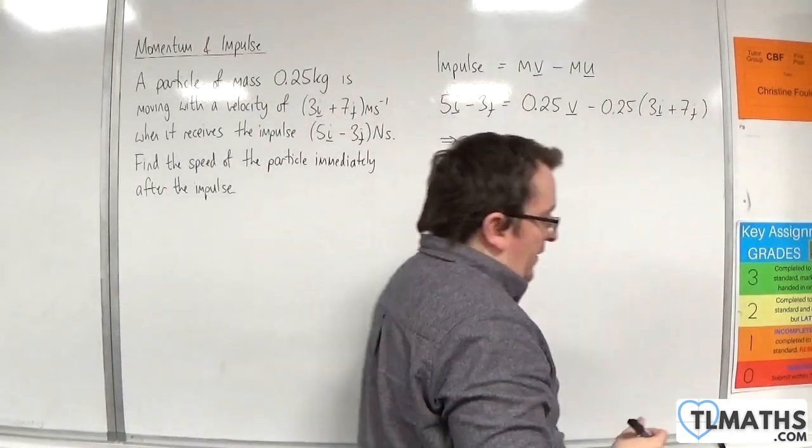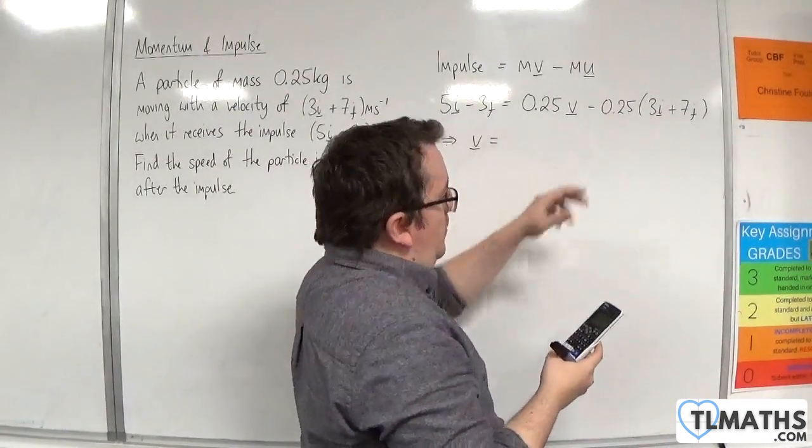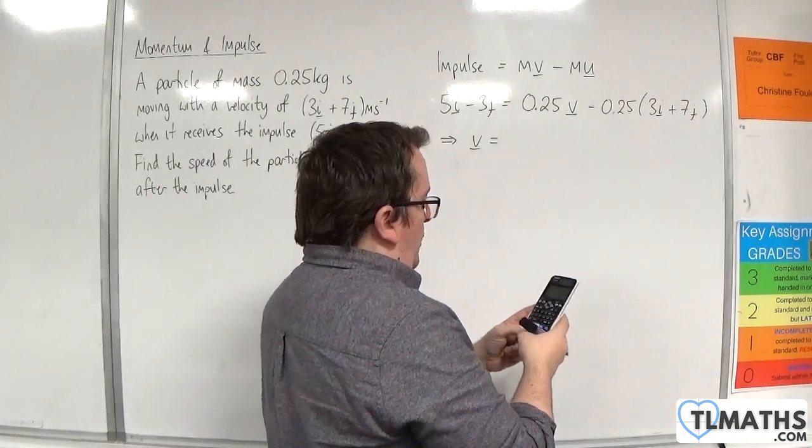So the velocity is—if we deal with the i components, we've got 5 + 0.25 times 3, and I need to divide that by 0.25.